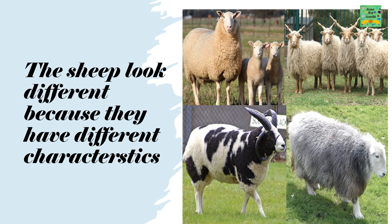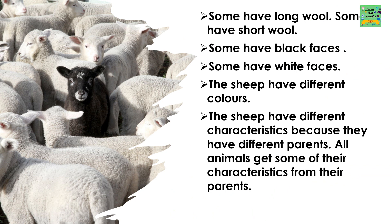The sheep look different because they have different characteristics. Some have long wool, some have short wool, some have black faces, some have white faces. The sheep have different colors. The sheep have different characteristics because they have different parents.